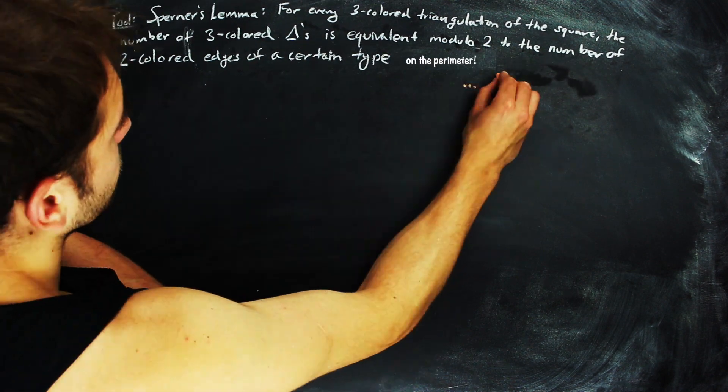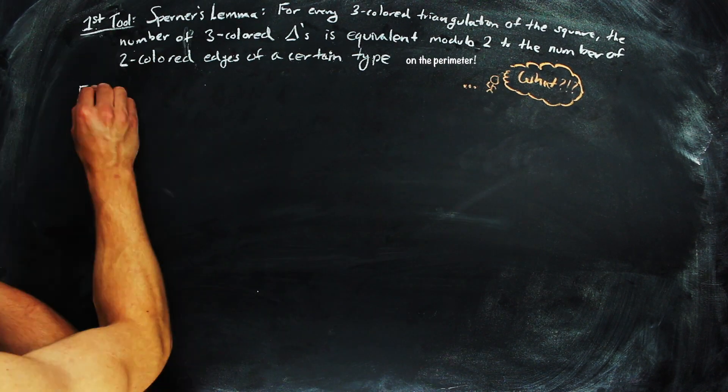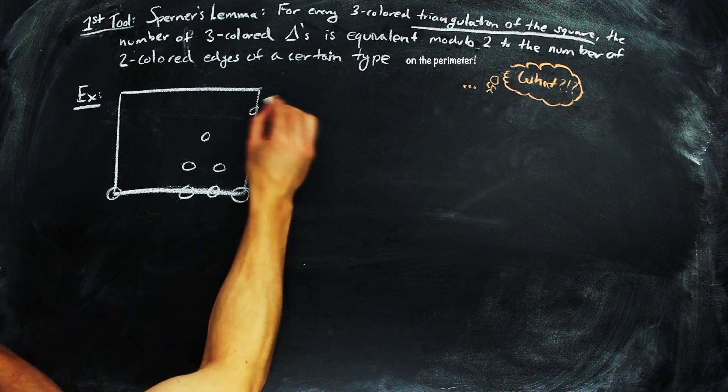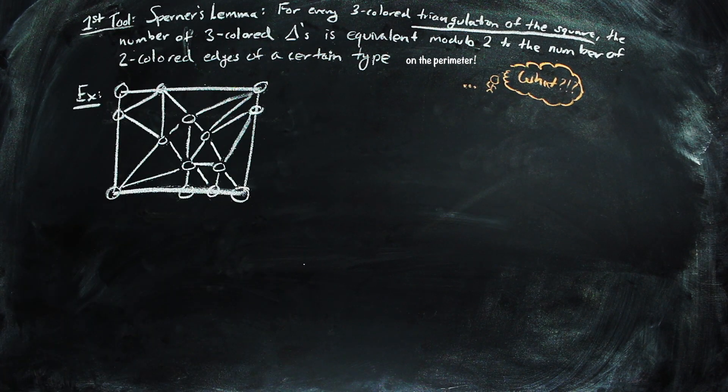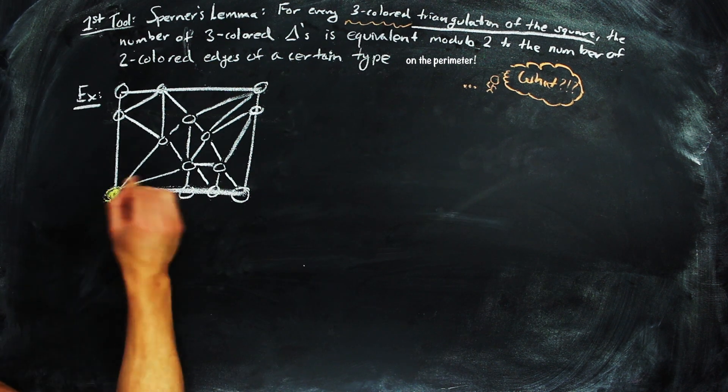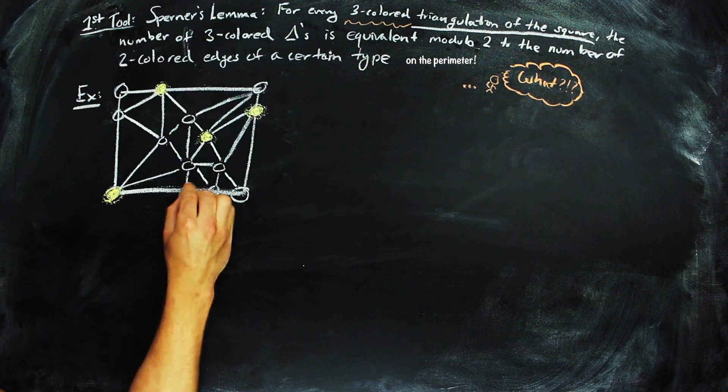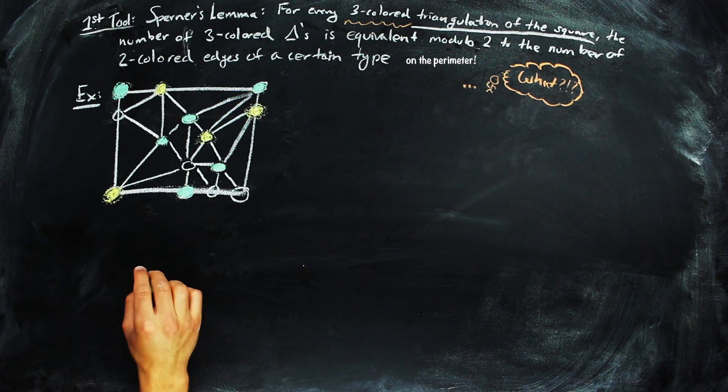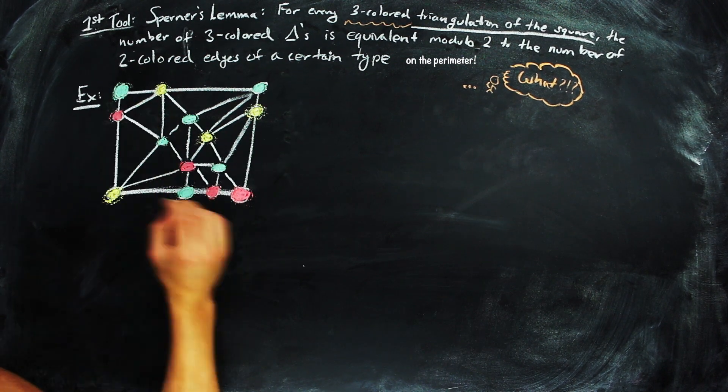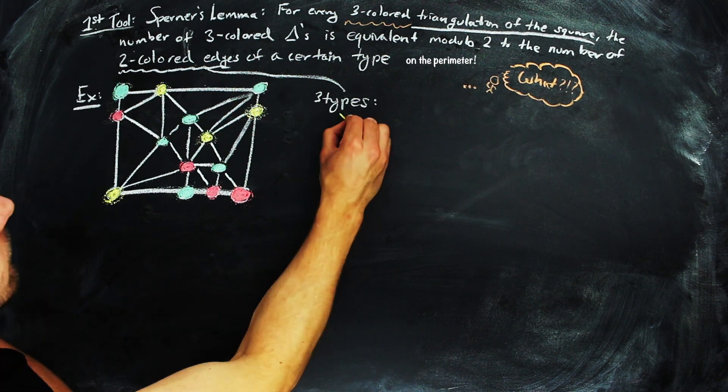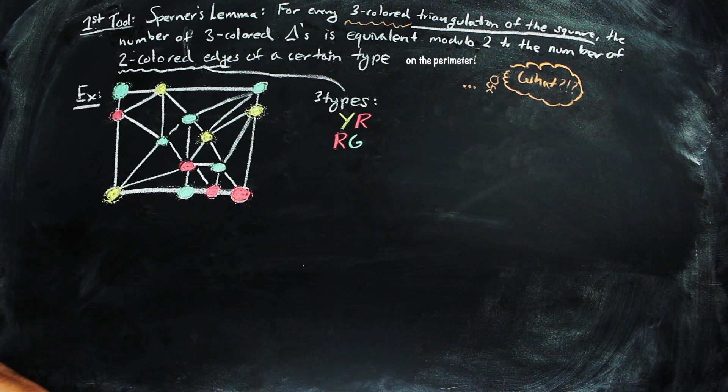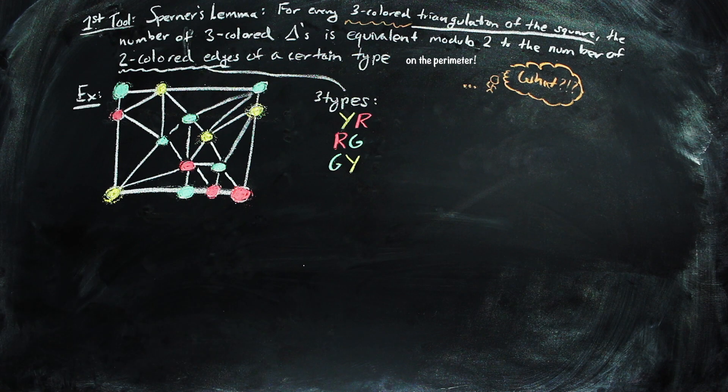So, what does that mean? Well, first off, a triangulation of a square is a graph like this one, where every region is a triangle, and a three-colored triangulation is just one where the vertices have exactly three different colors, let's say red, yellow, and green. Now, there are three different types of two-colored edges that may occur: yellow-red, red-green, and green-yellow. For the rest of the video, our chosen type is red-green.